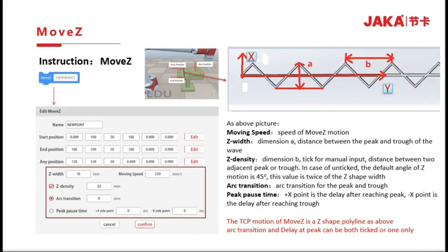Moving speed controls the speed of MOVZ motion. As the picture shows, dimension A represents the distance between the peak and trough of the wave, while dimension B represents the distance between two adjacent peaks or troughs. If unticked, the default angle of Z-motion is 45 degrees, meaning B will be twice the dimension of A.